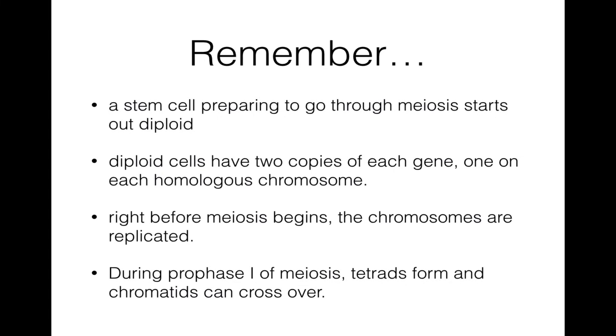that a stem cell, for example a cell inside of an ovary or a cell inside of a testis, is getting ready to go through meiosis. It's going to start out as a diploid cell, and when it completes meiosis, it's going to make haploid gametes. Diploid cells have two copies of each gene, one on each homologous chromosome. We call each of these copies alleles, and they can be alike or they can be different.